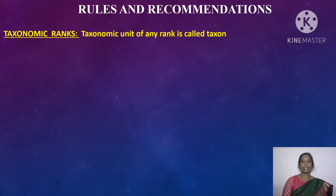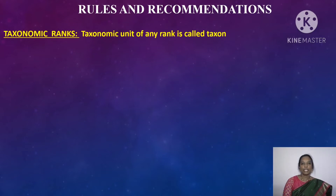Rules and Recommendations. The taxonomic unit of any rank is called a taxon. The term taxon was first introduced in the Stockholm Code, which was held in 1952. Taxon refers to a taxonomic group of any rank. Species is the basic taxon. The other taxa of higher rank in ascending series are genus, family, order, class, division and kingdom.